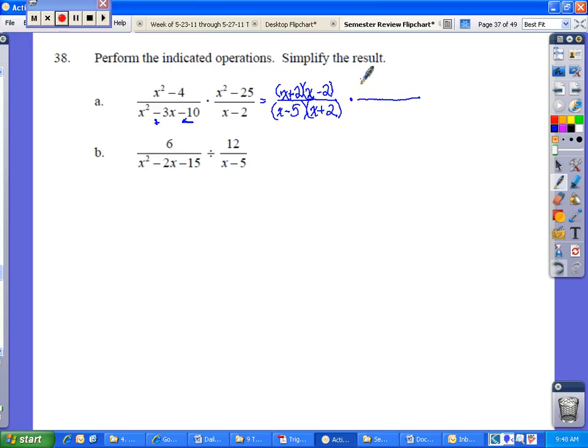Then x squared minus 25 is also a difference of squares. So it's going to be x plus 5 and x minus 5. And then the x minus 2 stays as is on the bottom.